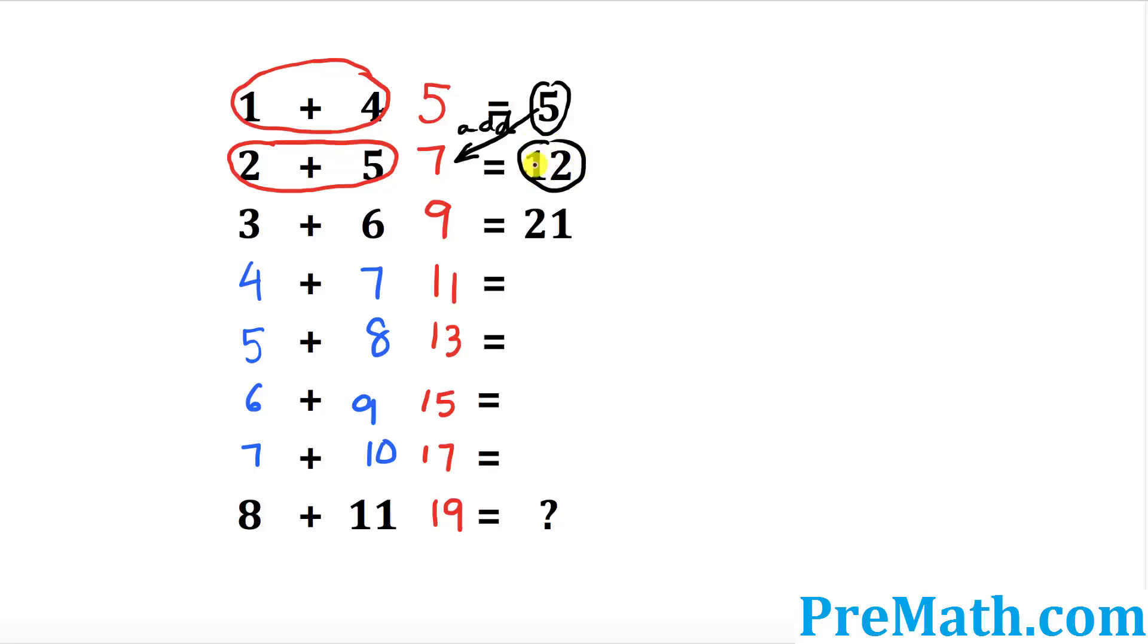Now, what if we add 12 to 9 diagonally again, we're going to get what? 12 plus 9 is going to be 21. Awesome.